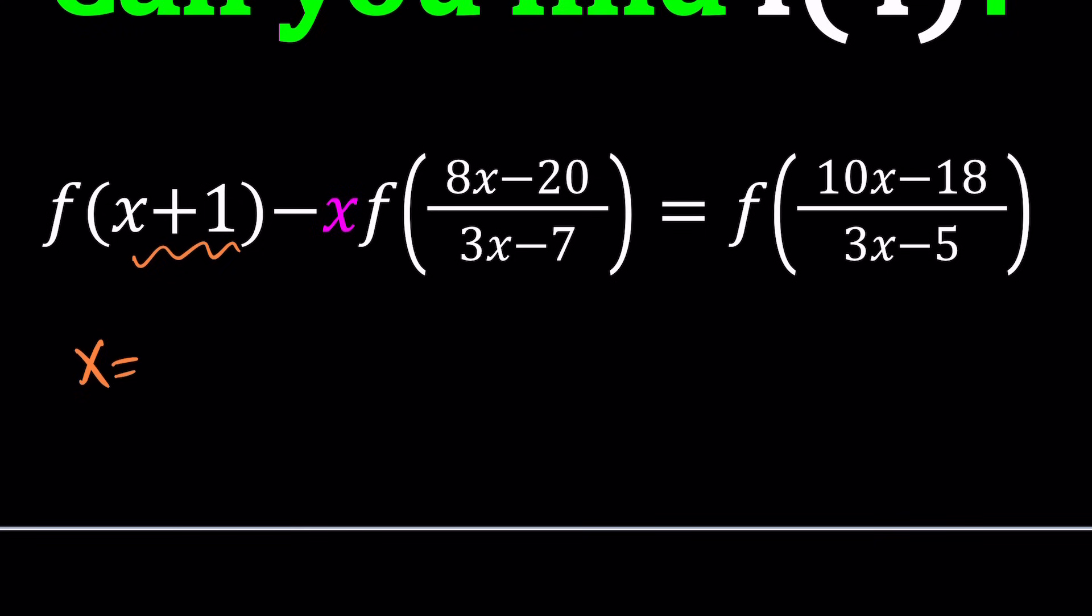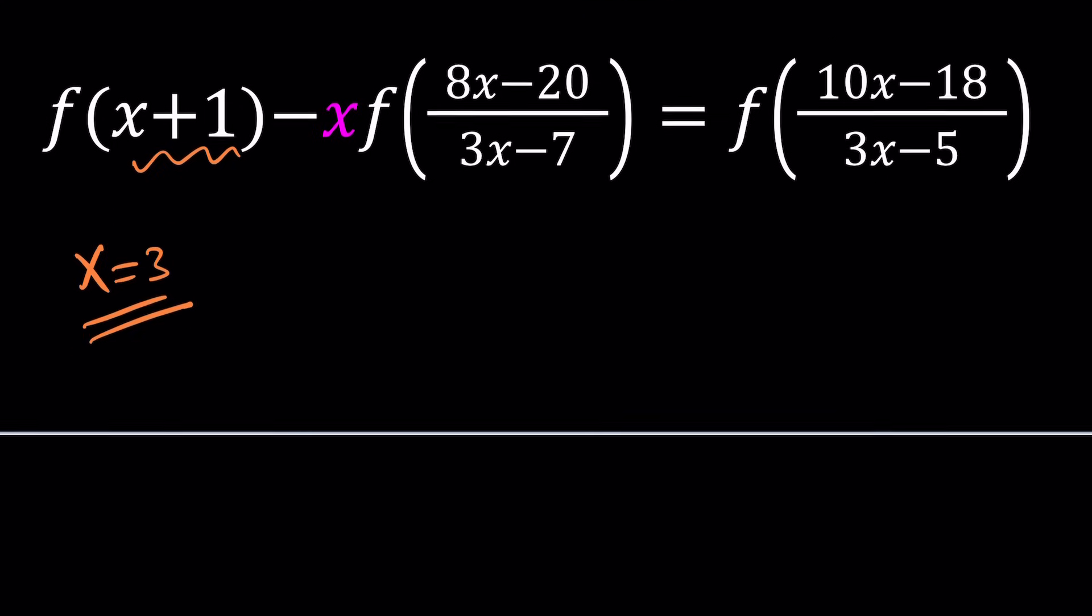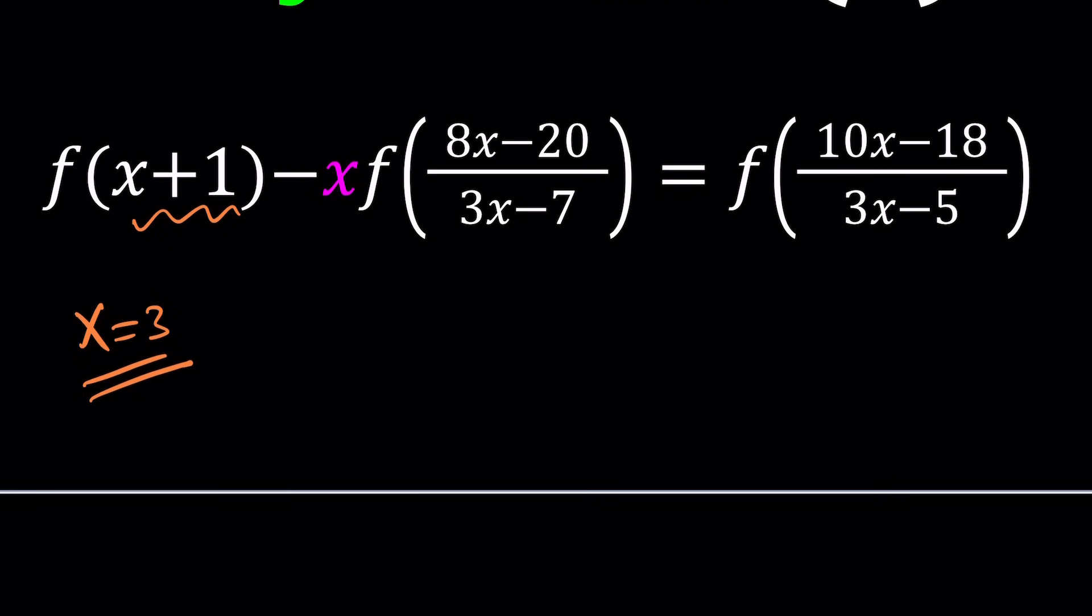So replace x with 3, and when you do, you're going to get the following: f(4) minus 3 times f of, now this is going to give you some messy expression, right? So before we write it in there, let's evaluate it. Maybe we can even do it mentally because this problem was designed in such a way that the solution will be somewhat nice.